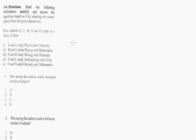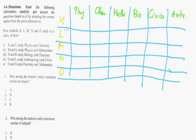Beginning with the first question. We are given 5 students K, L, M, N and O. They study 6 subjects: Physics, Chemistry, Maths, Bio, Civics and Anthropology. Going with the directions.